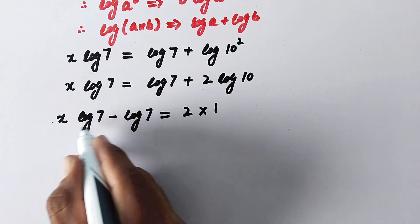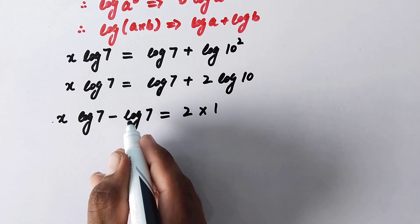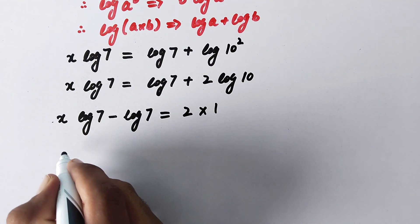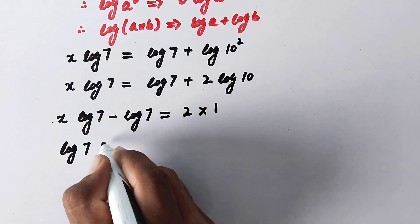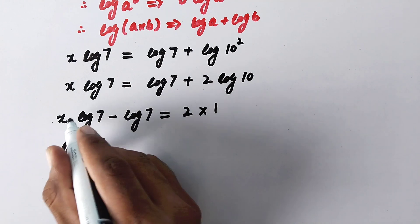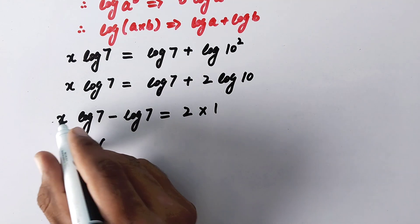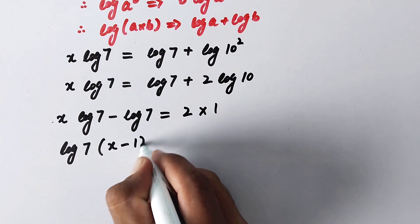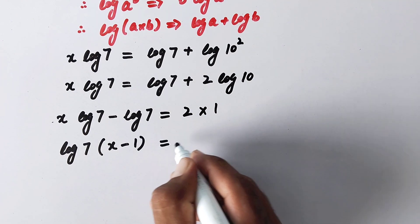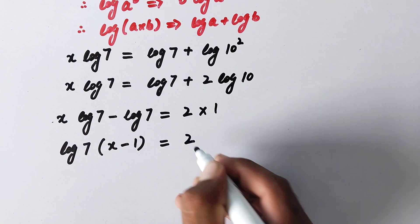So now here we will take log 7 as common from left side of equation, so it will be log 7 as common factor and x log 7 divided by log 7 it will be x, and here is 1, equal to 2 multiplied by 1 is 2. Or in next step we will write x minus 1 is equal to 2.